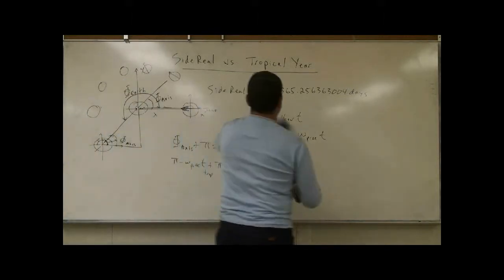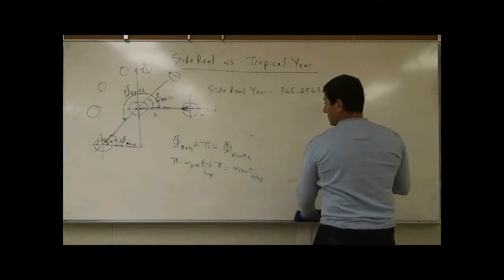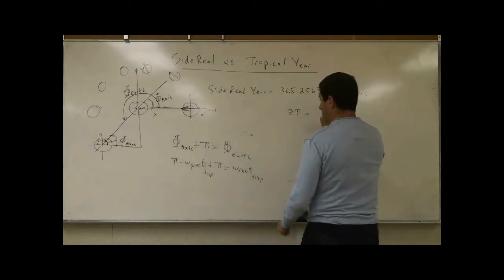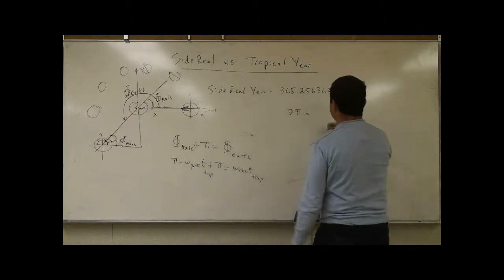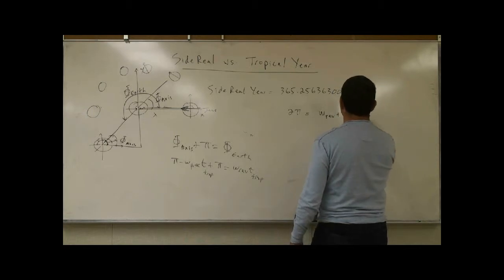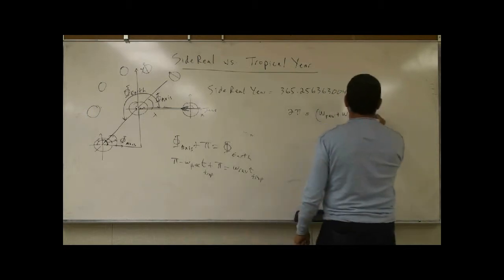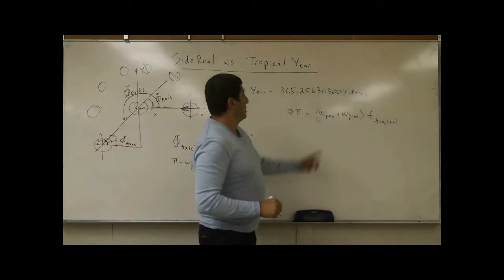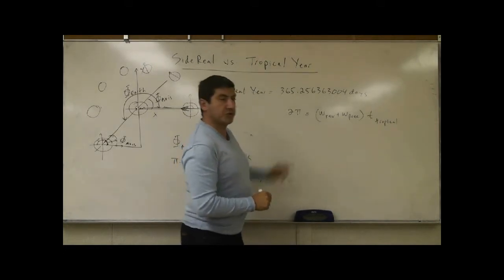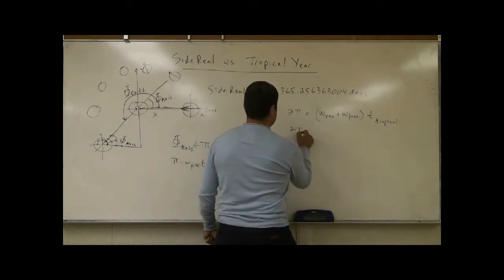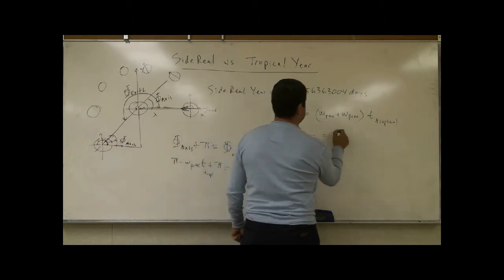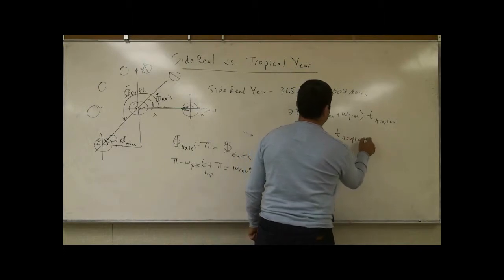So what's the general equation? You're going to have 2 pi. Pi and pi are going to cancel. And then on this minus, he's going to come over here. You're going to get W_revolution plus W_precession, T_tropical. And then you can take these two W's and put them at the bottom: 2 pi over W_revolution plus W_precession is the time that it takes for the tropical year to occur.